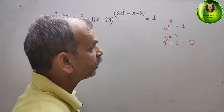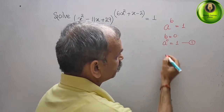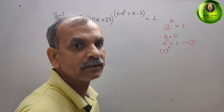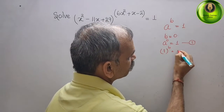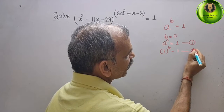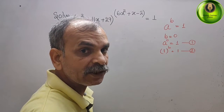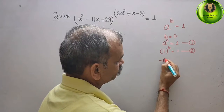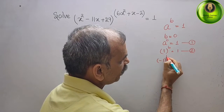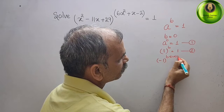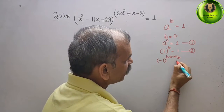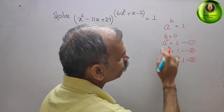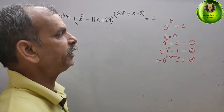The second condition is: if a is 1, then 1 raised to any integer power gives you 1. The third condition is: if a is minus 1 and the power b is even, then you will get 1. These are the three conditions.